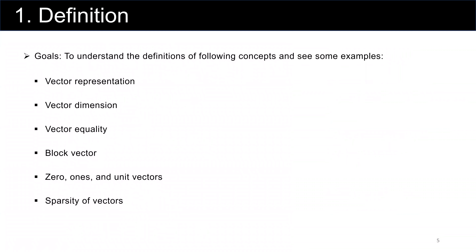All right, so let's start with the definitions. The goal of this part is to understand the definitions of the following concepts and see some examples of each of them. First, we go over vector representation — how we can represent and define a vector. Then we talk about vector dimension, vector equality, block vectors, and specific cases of vectors such as zero vectors, ones vectors, and unit vectors. Then we talk about sparsity of vectors.